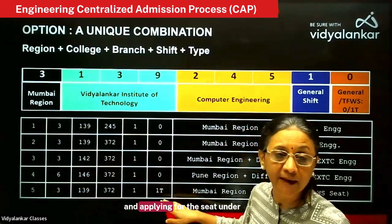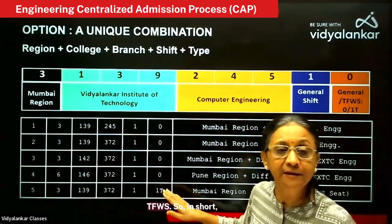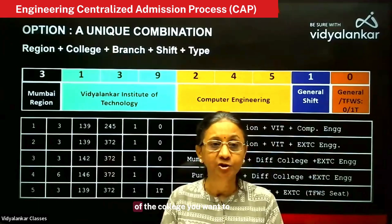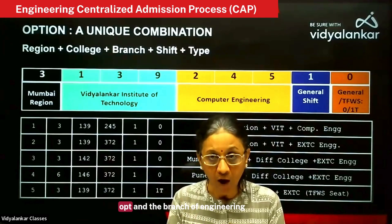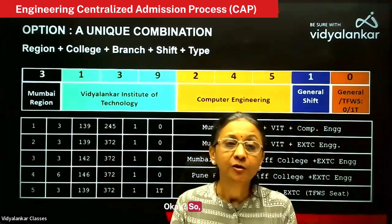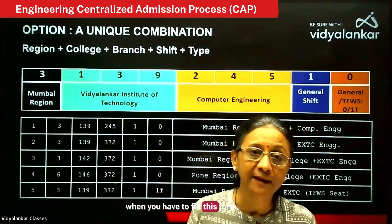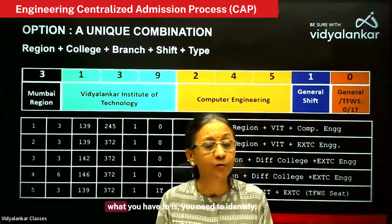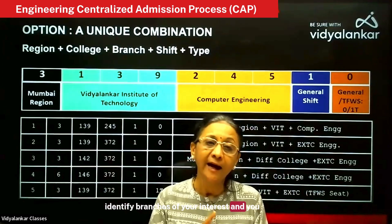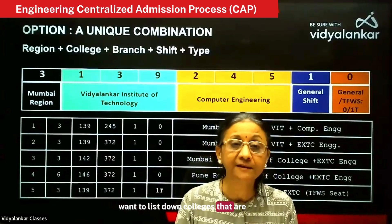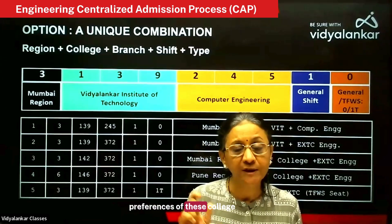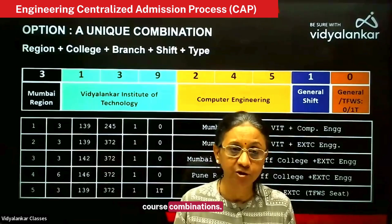So in short, an option is a unique combination of the college you want to opt and the branch of engineering you want to study. When you fill the option form, first you need to identify branches of your interest, list down colleges that are acceptable to you, and give preferences to these college-course combinations.